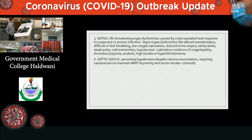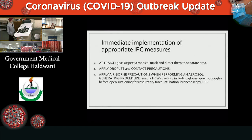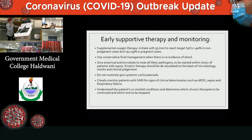Immediate implementation of appropriate infection prevention and control measures should occur at triage, applying droplet and contact precautions, and airborne precautions when performing aerosol-generating procedures such as intubation and bronchoscopy. Early supportive therapies include supplemental oxygen therapy and conservative fluid management — patients should not go into fluid overload. Empirical antibiotics can be given to prevent secondary infections. There is generally no role for corticosteroids. Trials on antivirals such as the antiretroviral drug lopinavir have been conducted in these patients.